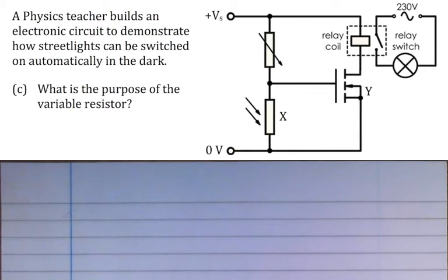So remember, this is a transistor switching circuit, and there was a slight problem in that I was talking about how streetlights can be switched on automatically in the dark. And over here, I placed a heater. I forgot to change that in the diagram. So I've now replaced this with the streetlight, as you can see now.